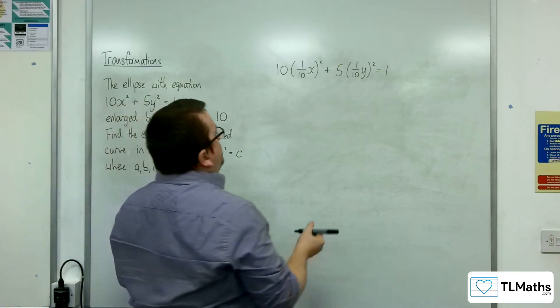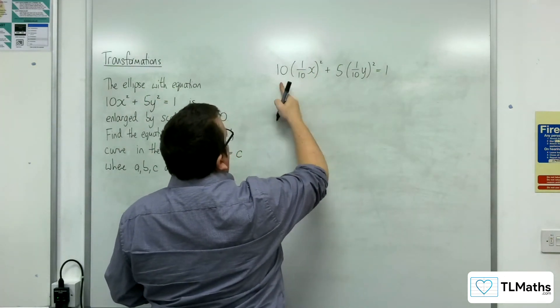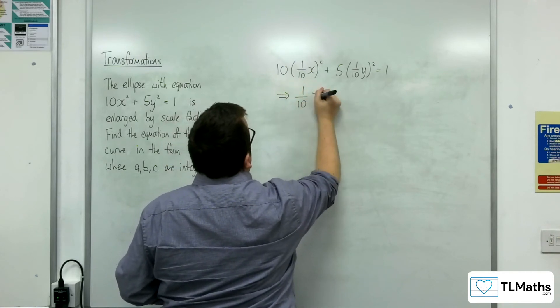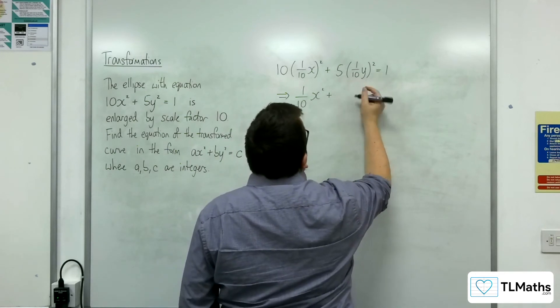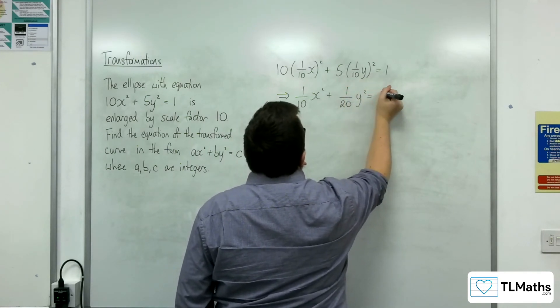Okay, so 1 over 10 squared is 1 over 100, times that by 10 just gives us 1 tenth. So we have 1 tenth x squared, then 5 over 100 is 1 over 20, y squared equals 1.